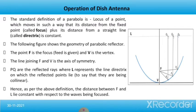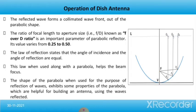Now we will talk about the operation of dish antenna. The standard definition of a parabola is the locus of a point which moves such that its distance from the fixed point, called the focus, plus its distance from a straight line, called the directrix, is constant. The following figure shows the geometry of the parabolic reflector. Here, point F is the focus and V is the vertex. The line joining F and V is the axis of symmetry. PQ are the reflected rays, where L is the directrix line. The ratio of focal length to aperture size, F/D, known as the F-over-D ratio, is an important parameter, with values ranging from 0.25 to 0.50.